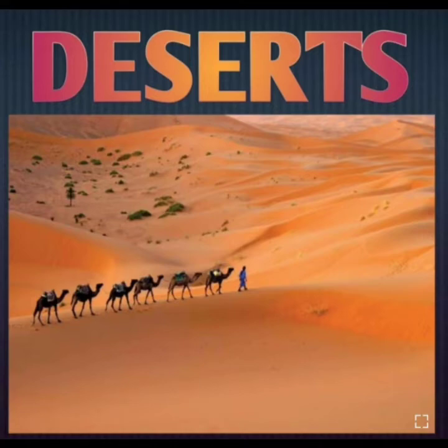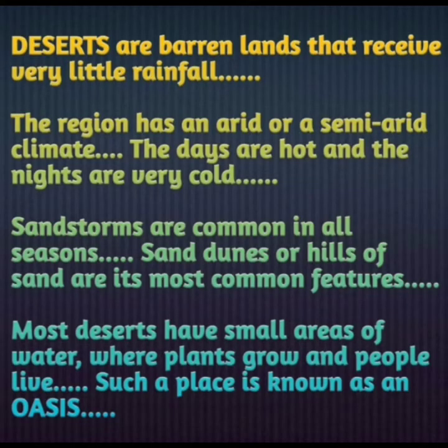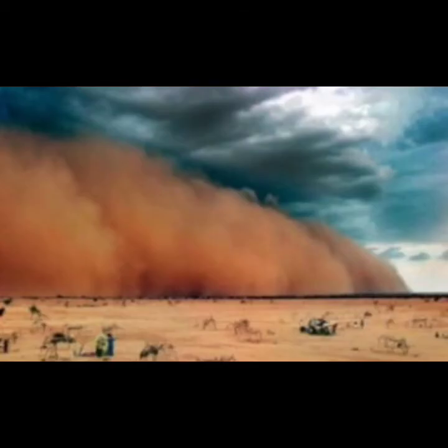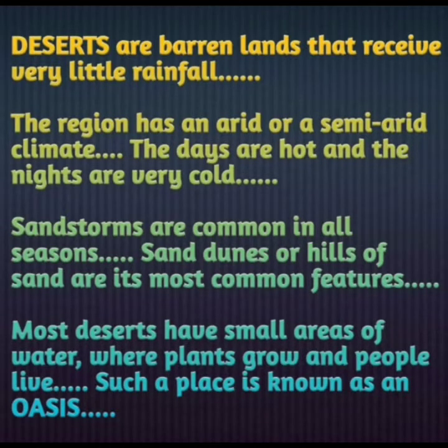Next are the deserts. Deserts are barren lands that receive very little rainfall. The region has an arid or semi-arid climate — arid means dry, so here the climate is either completely dry or receives very little rain, making it semi-arid.